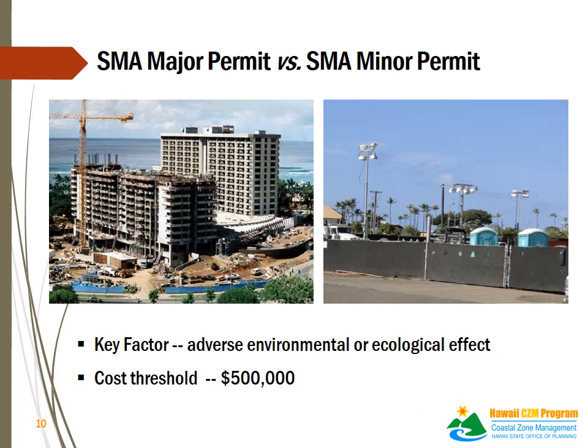The key factor in determining whether an SMA major permit or SMA minor permit is required for a proposed development within the SMA is its adverse environmental or ecological effect, taking into account potential cumulative effects. Enacted by Act 153, Session Laws of Hawaii 2011, the cost threshold between an SMA major and SMA minor permit is $500,000. When a proposed development has a substantial adverse environmental or ecological effect, or its construction valuation is more than $500,000, an SMA major permit will be required.